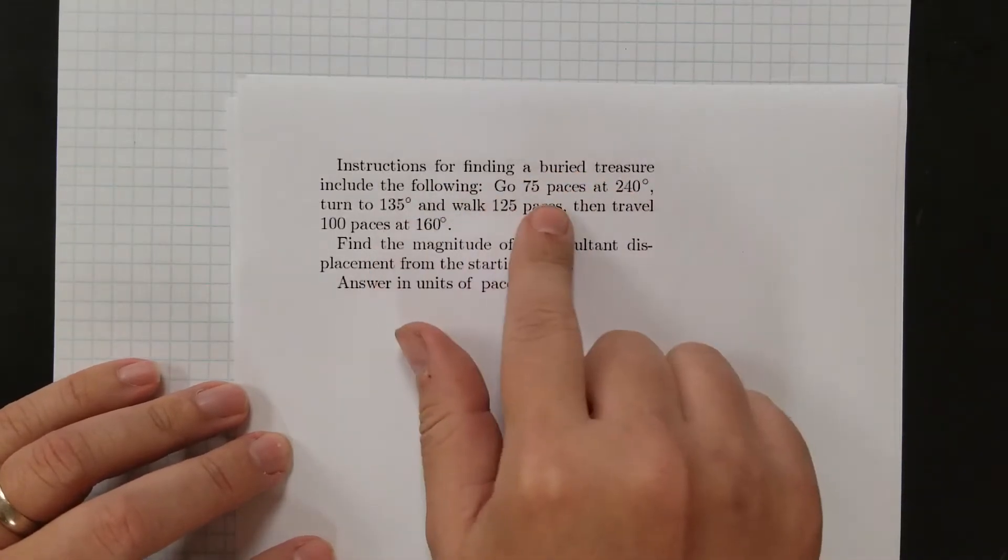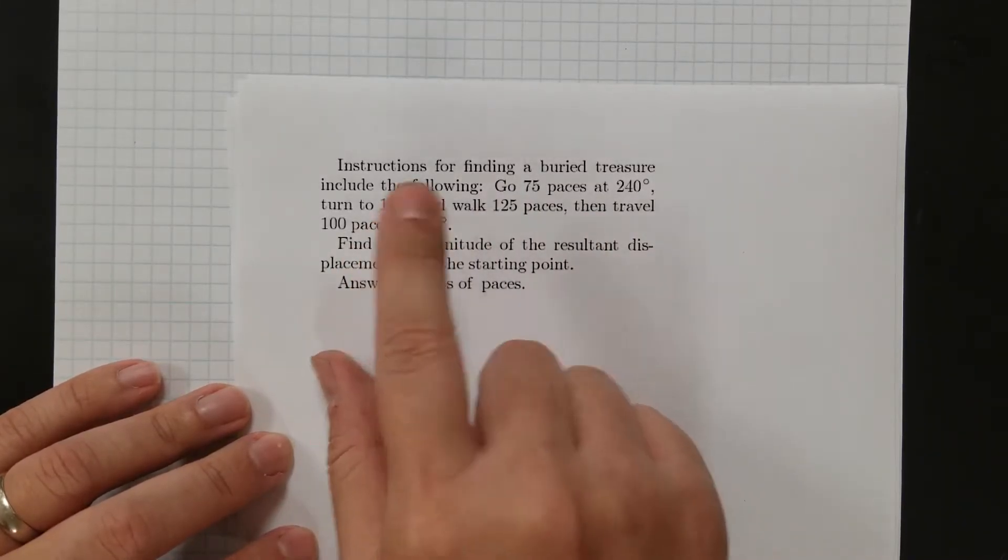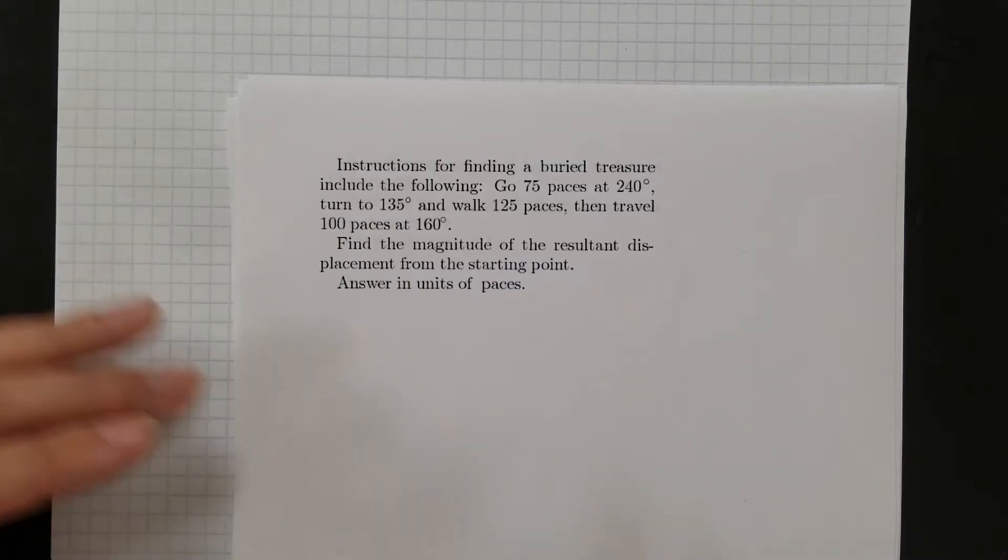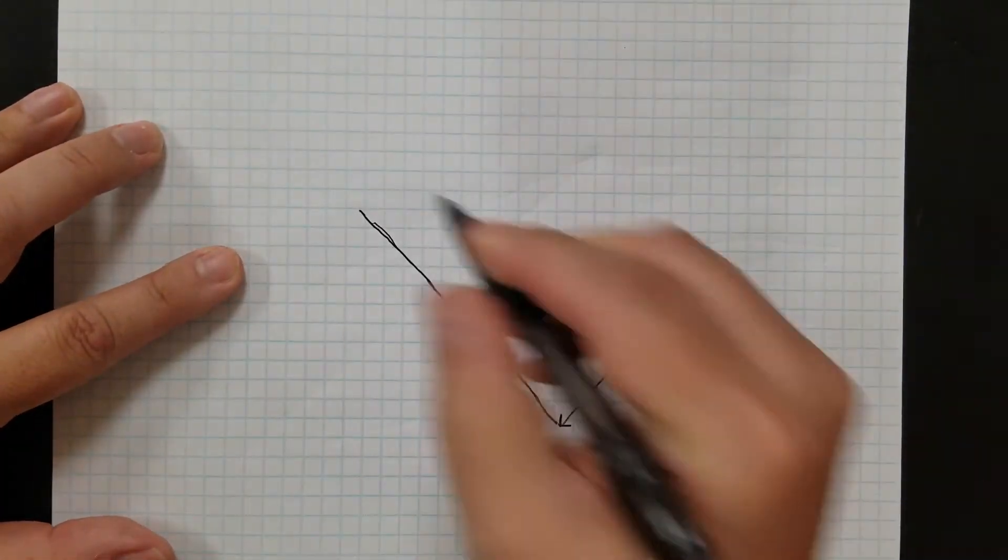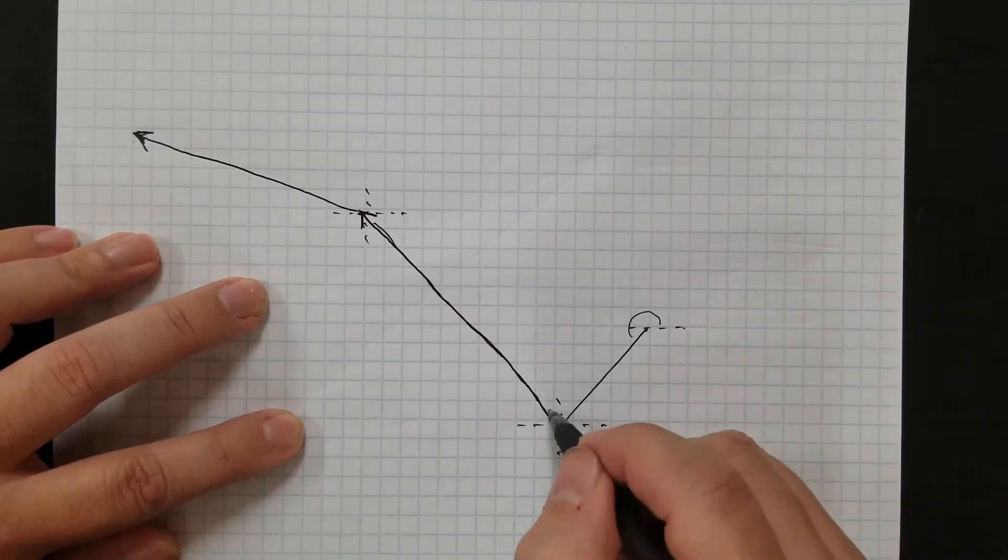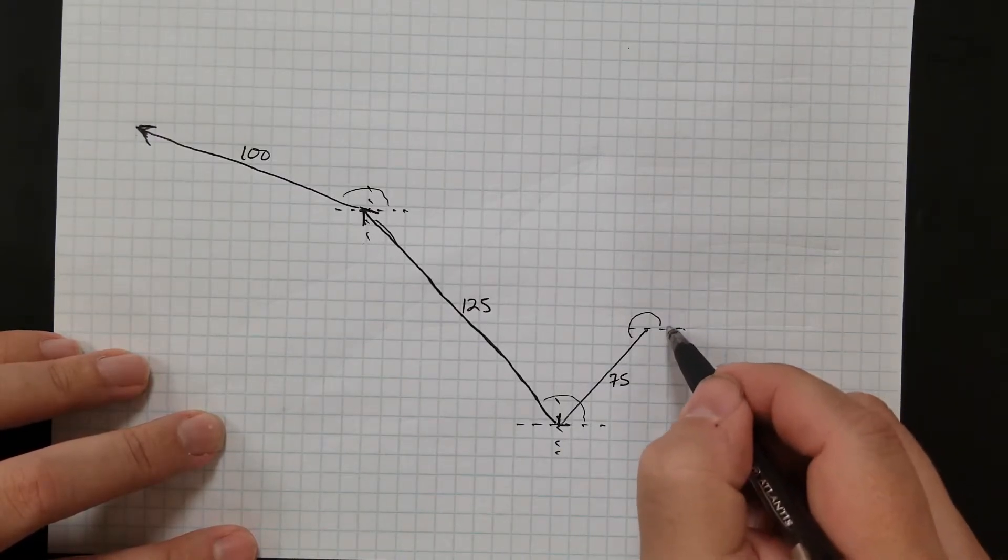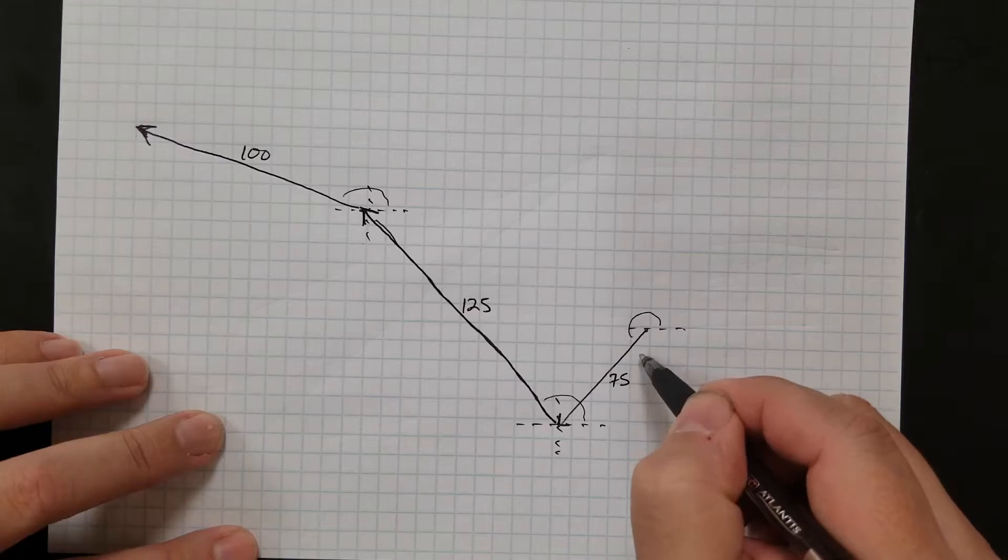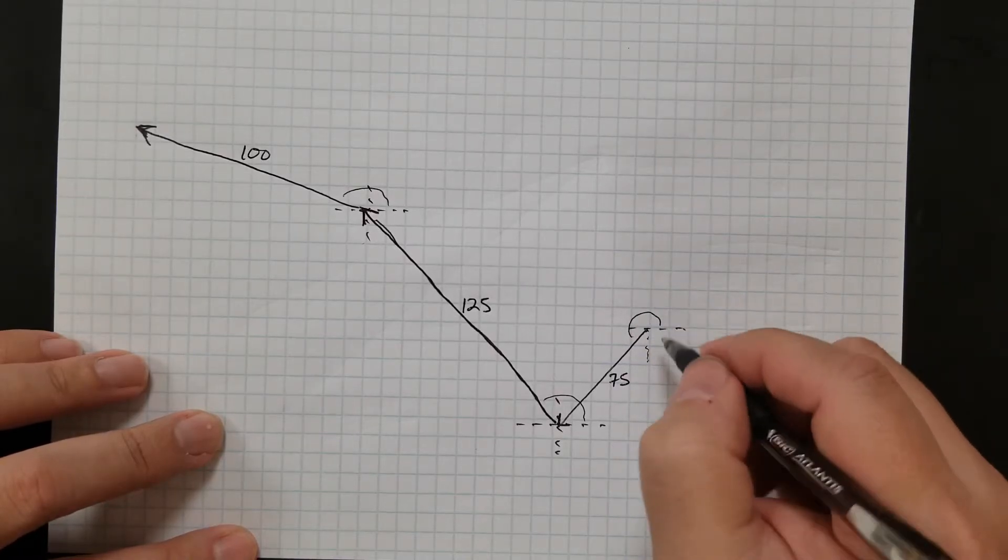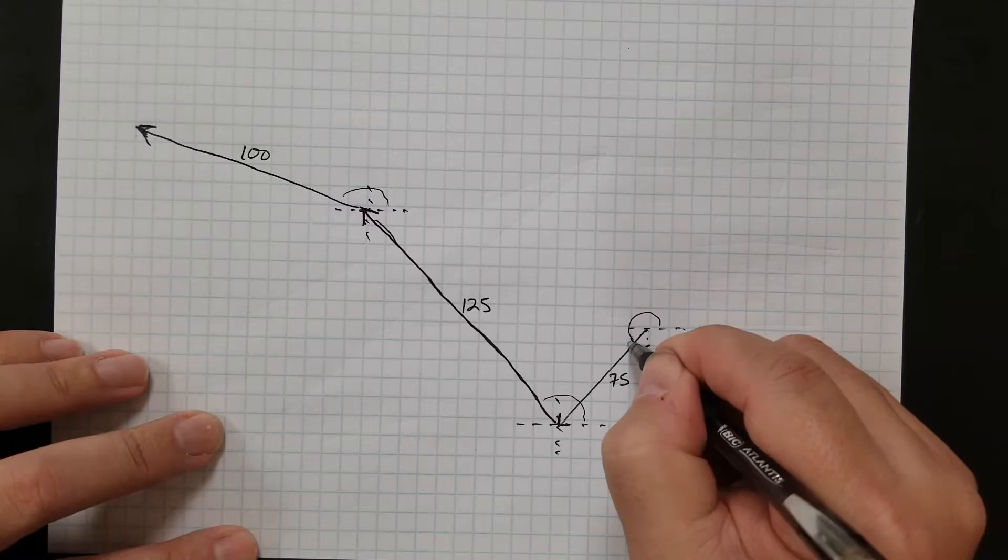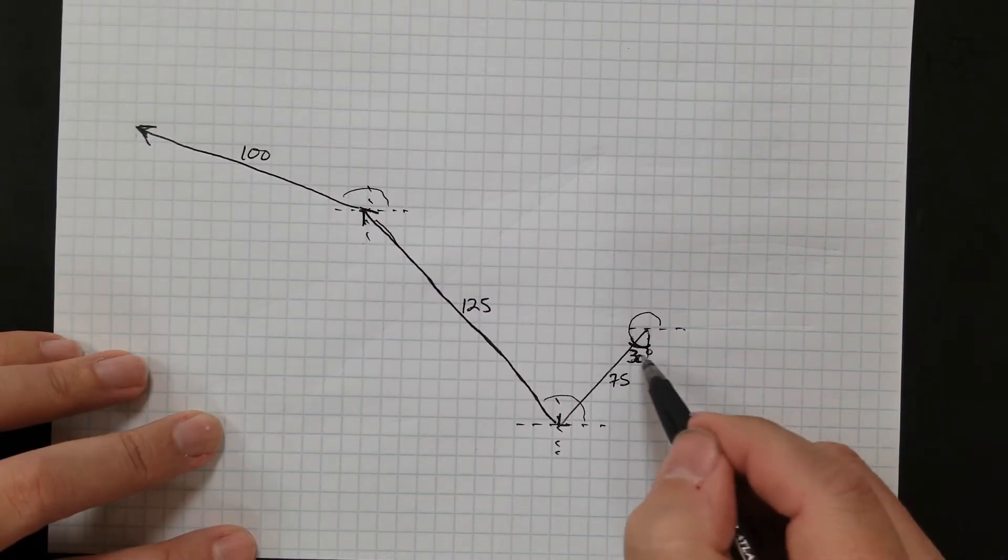Okay, here's my third problem. Finding a buried treasure, I'm going to go 75 paces at 240, turn to 135 degrees, walk 125 paces, and then I'm going to go 100 paces at 160 degrees. I want to find the magnitude and direction. So first, before I start getting into this, let me draw it. Always got to draw your vectors first. Okay, so here's what I've got here. 75 at 240 degrees. So 240 degrees is going to be down here right before 270. Because 270 would be at the bottom of the third quadrant. So that's 240 degrees. So that makes this angle right here 30 degrees. All right, this angle here is 30 because 270 minus 240 is 30. Okay?